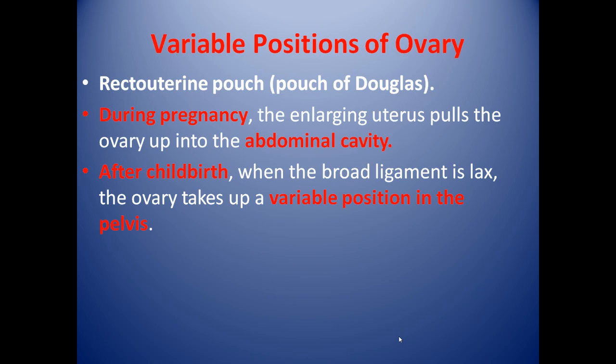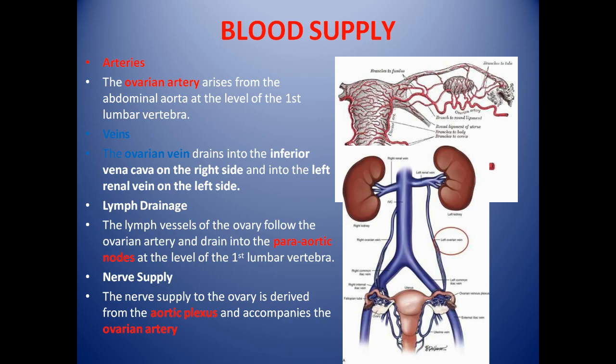The variable positions of the ovary: the recto-uterine pouch, also called the pouch of Douglas, is relevant here. During pregnancy, the enlarging uterus pulls the ovary up into the abdominal cavity, and after childbirth, when the broad ligament is relaxed, the ovary takes up a variable position in the pelvis. Blood supply arises from the abdominal aorta at the level of the first lumbar vertebra. The ovarian veins drain into the inferior vena cava on the right side and into the left renal vein on the left side. Lymph drainage follows the ovarian artery and drains into the para-aortic nodes at the level of the first lumbar vertebra. Nerve supply is from the aortic plexus, which accompanies the ovarian artery.